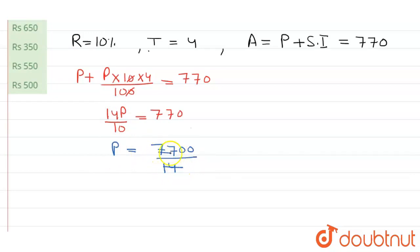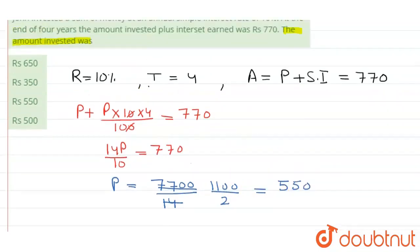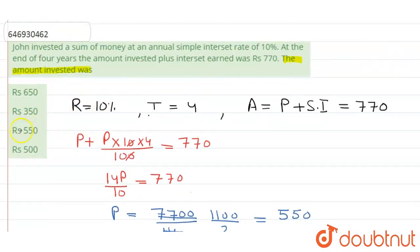So cancelling this out, 1100 upon 2 equals 550. So 550 is the right answer. This is 550, so the third option is the right one. Thank you so much.